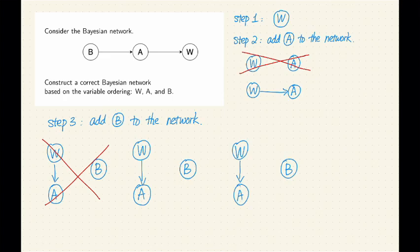One is we can choose A to be the only parent of B, or we can choose W to be the only parent of B. Okay, let's look at these possibilities. First of all, can we choose A to be the only parent of B?